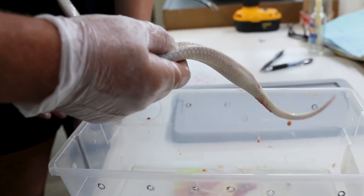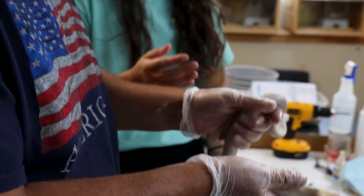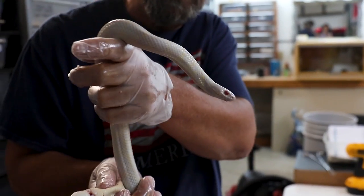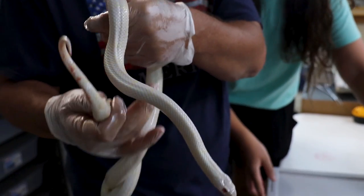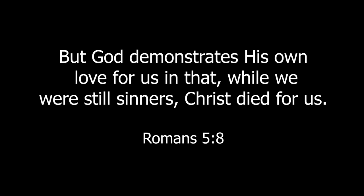So there we go. Now we're going to place her back into her enclosure and as you can see, tongue's flickering, she's okay, she's going to be fine. We saved her life, she won't die from being egg bound. We're going to give her a little bit to rest and then we're going to offer her up a meal.